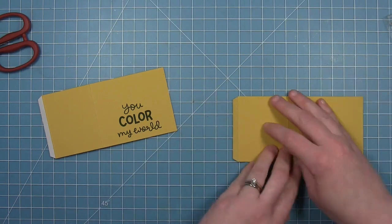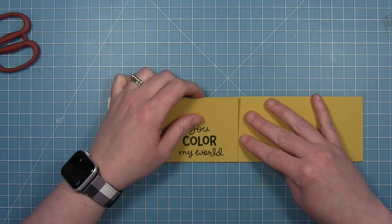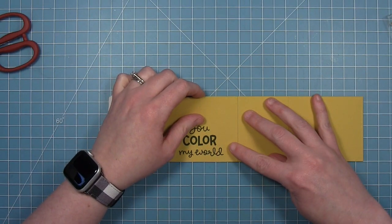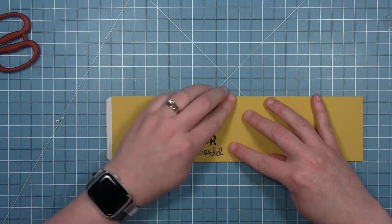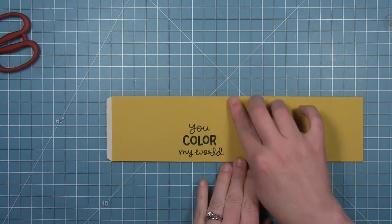So I've just pulled the backing off that one flap where the adhesive was, and I'm just using my grid mat to make sure it's all nice and straight, and then I can just line those two pieces up.